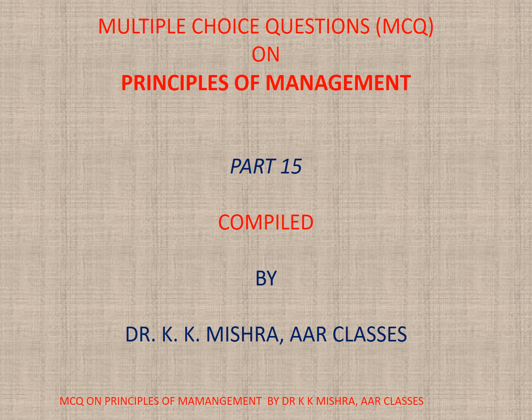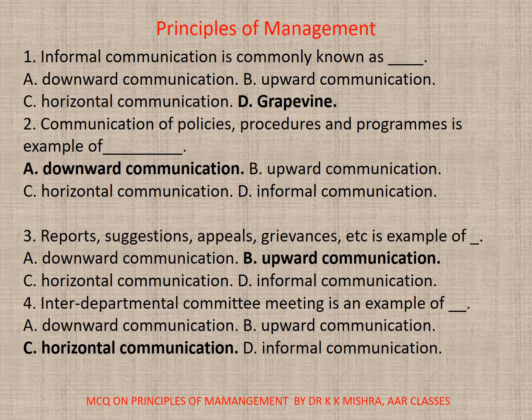Question 1: Informal communication is commonly known as — a) Downward communication, b) Upward communication, c) Horizontal, or d) Grapevine. Correct option is d) the Grapevine. Question 2: Communication of policies, procedures, and programs is an example of —